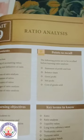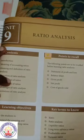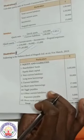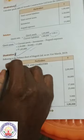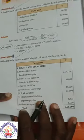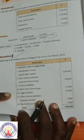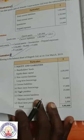Good morning students. Unit 9, Ratio Analysis. Illustration 3. Following is the balance sheet of Magus Ltd. as on 31st March 2019.